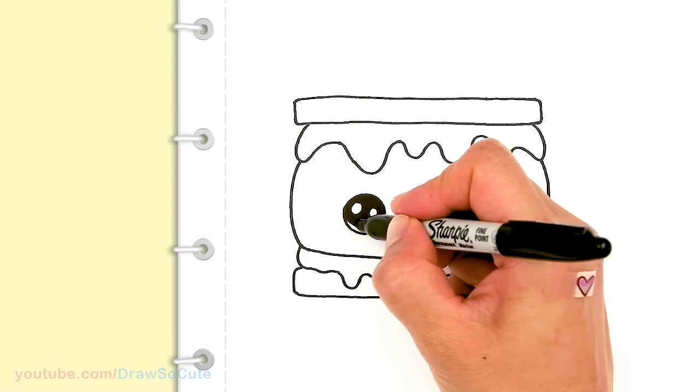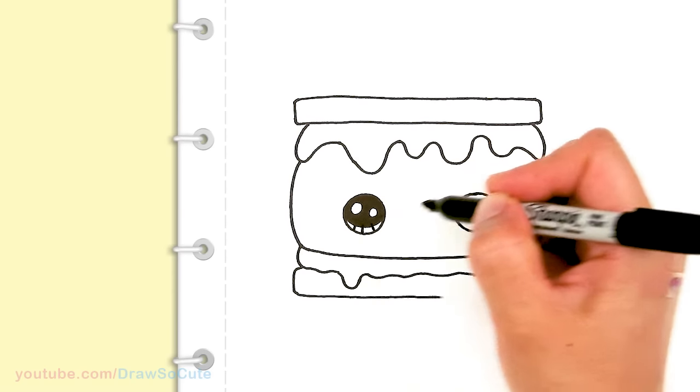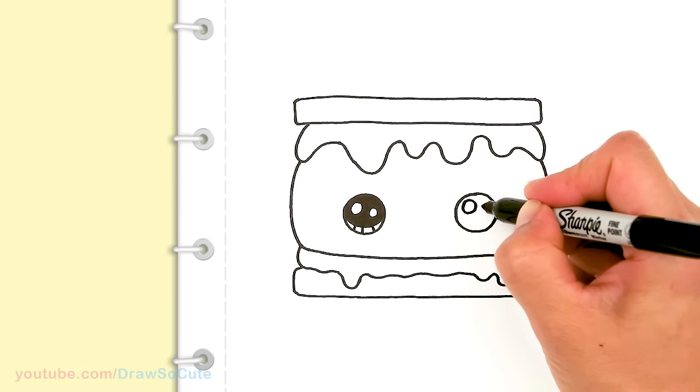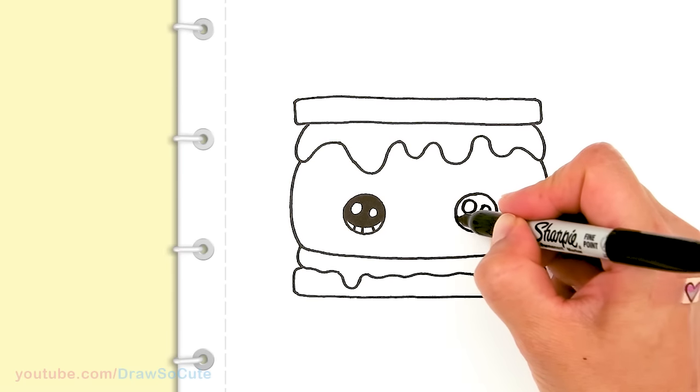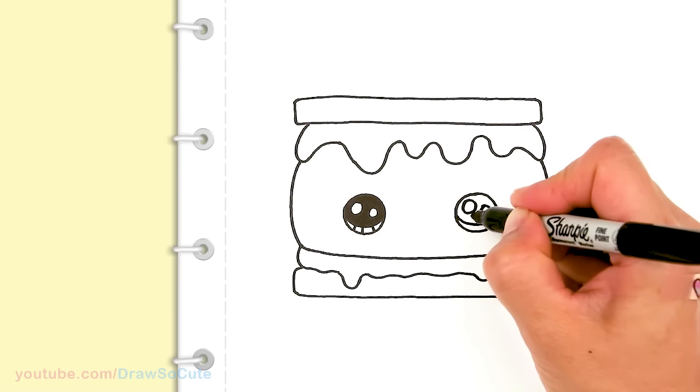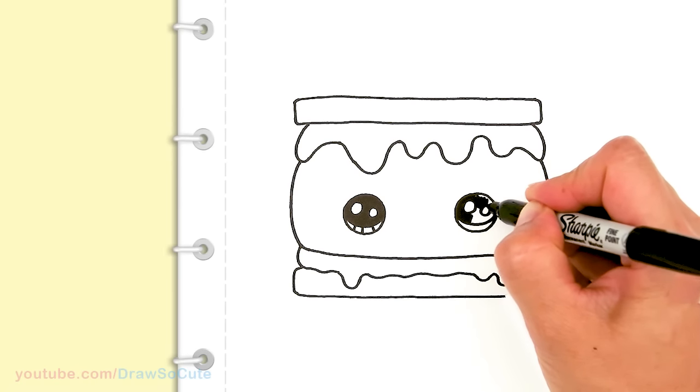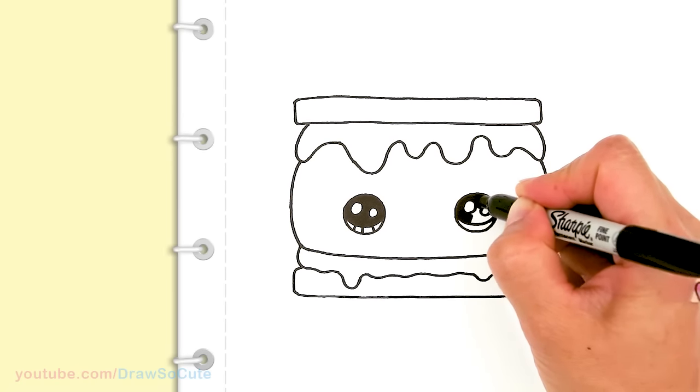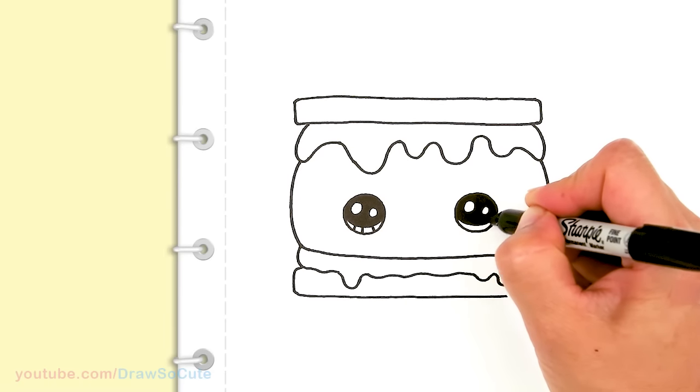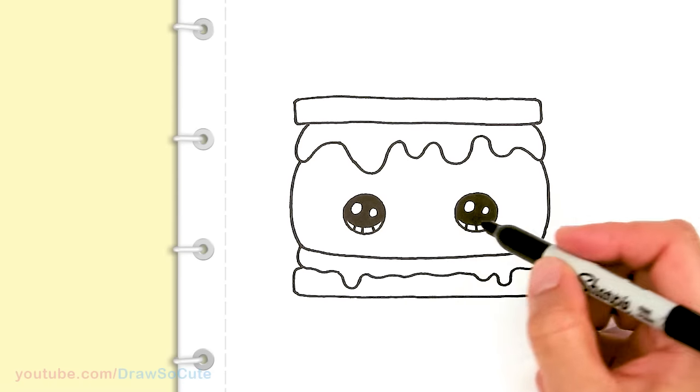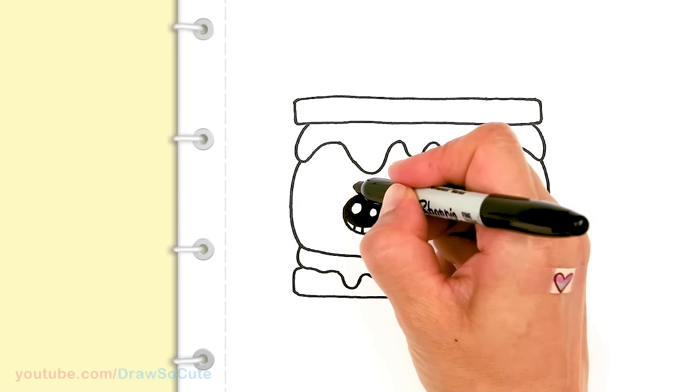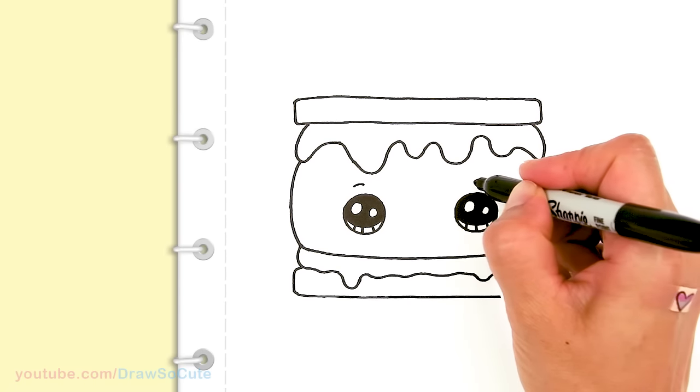Then lines on the bottom right here, and the same thing on this side. And after you have the eyes in, let's just come right up here and draw a curve right on top of each eye. And then of course let's add a cute little smile right in the center.